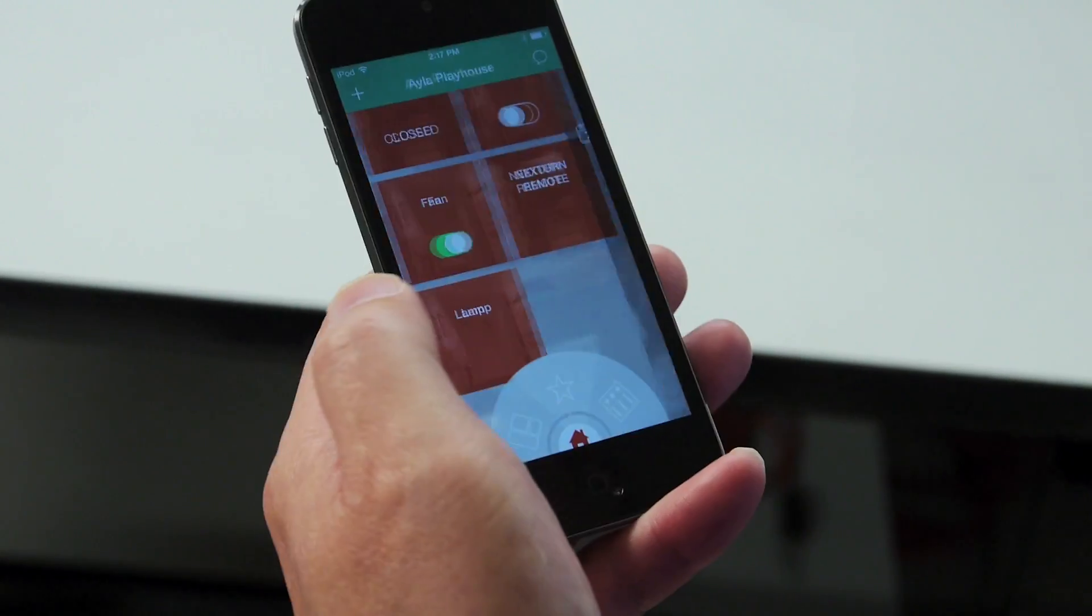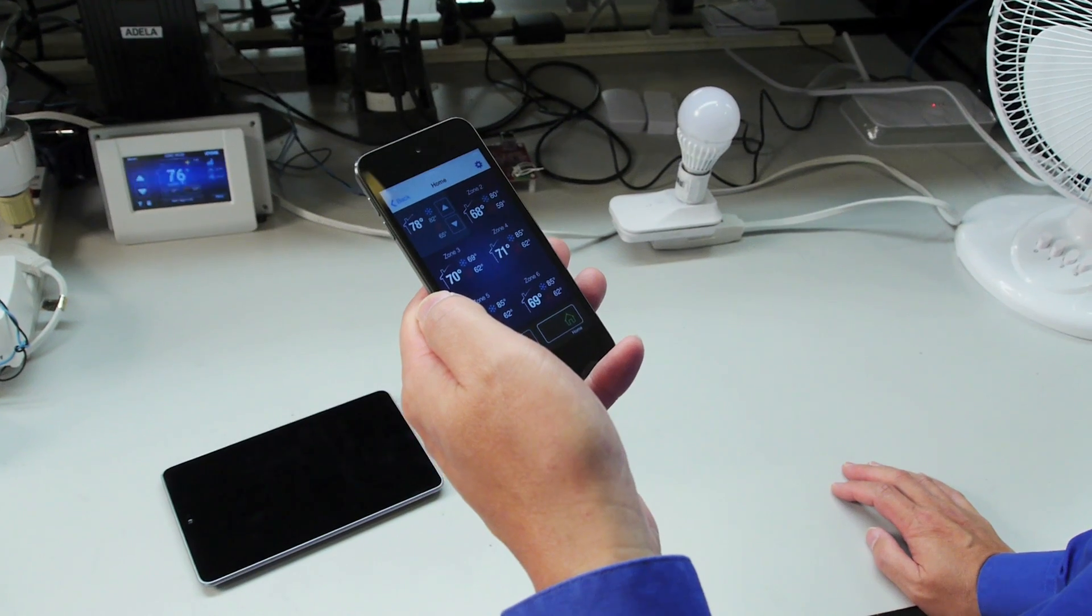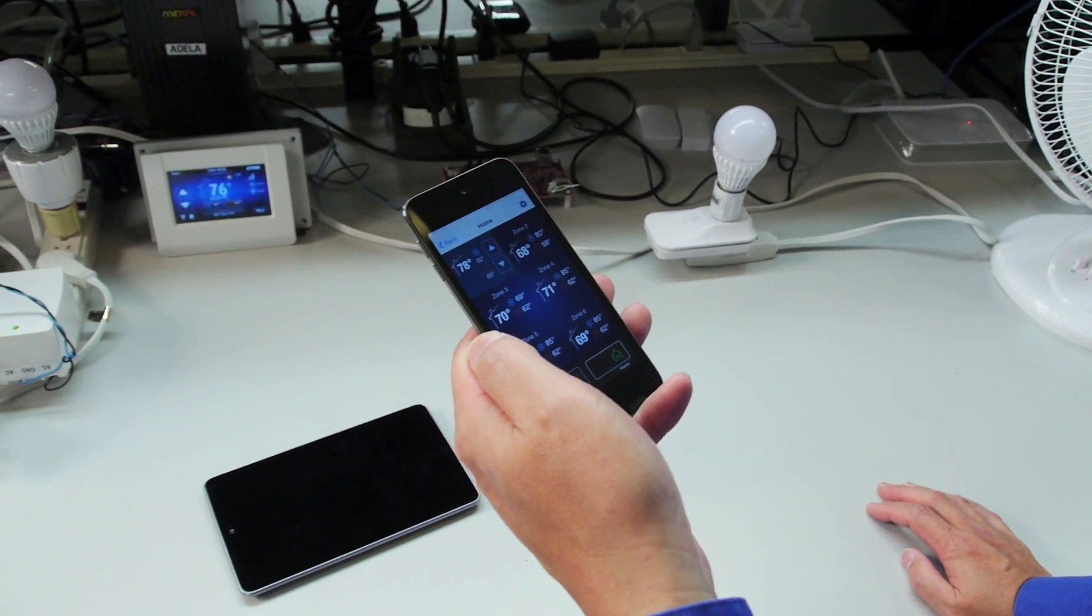We work backwards from that fantasy and figure out what parts are missing right now that could potentially inhibit that future from unfolding. One of the obvious ones is that there aren't enough electrical engineers on Earth to design that many devices. So one of the activities that's taking place here is automated design tools that can act as a workforce multiplier.